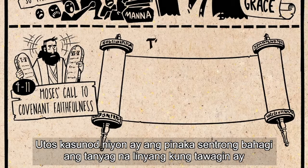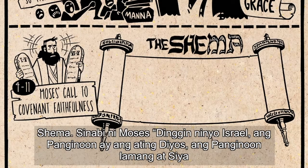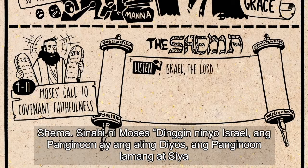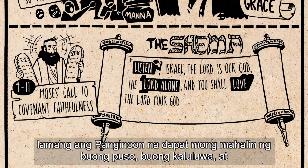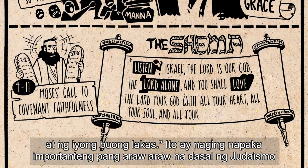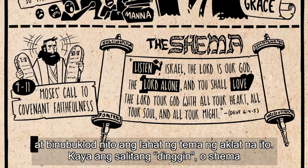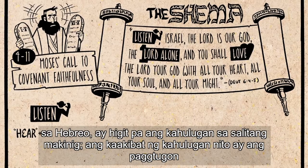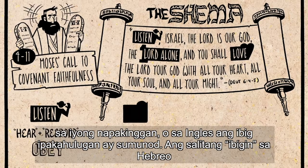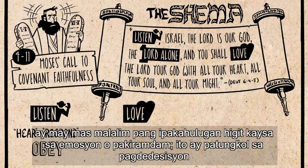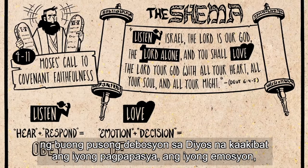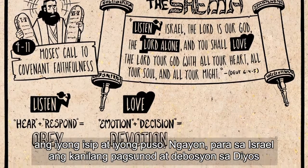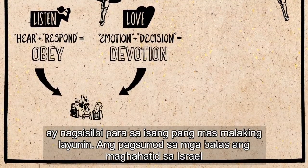Moses reminds them of the Ten Commandments, and then the centerpiece of the section is a famous line called the Shema. This became a very important daily prayer in Judaism and it brings all of the themes of the book together. The word 'listen' — or Shema in Hebrew — means much more than just to hear; its meaning includes responding to what you hear, or in English we would say 'obey.' And the word 'love' in Hebrew also means much more than just an emotion or feeling. It is about a decision of wholehearted devotion to God that involves your will and your emotions, your mind and your heart.